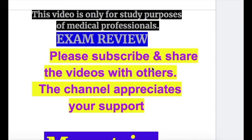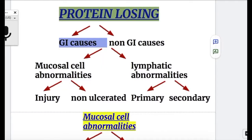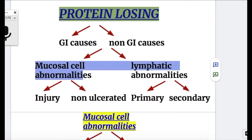In this video, we will discuss lymphangiectasia and Menetrier's disease. GI protein loss may be due to two causes: number one, mucosal cell abnormalities, or number two, lymphatic abnormalities.